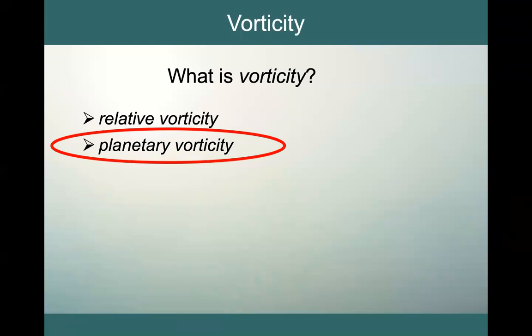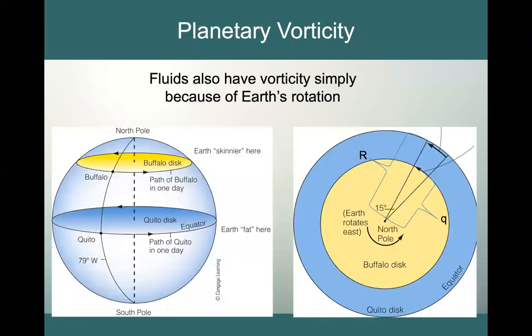As we've discussed, we do not just live on a flat earth that is not rotating, but we actually live on a spherical earth that is rotating. And so fluids on the earth have vorticity simply because the earth is rotating.